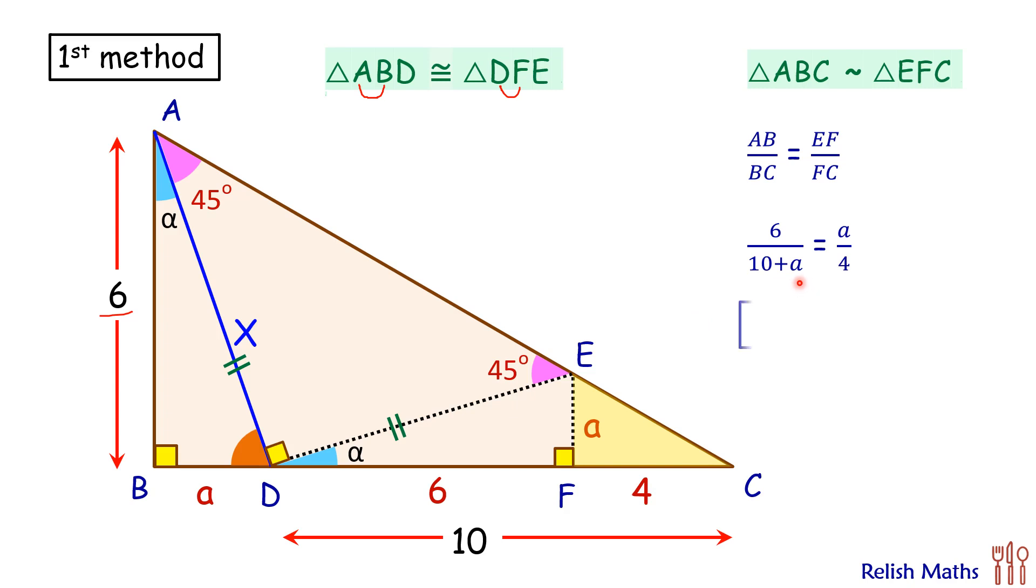On solving we'll get two values. Keeping the positive value we'll get a as 2 centimeter. Now in triangle ABD when we'll put a as 2, we can find the length AD or value of x by using Pythagoras theorem to get x as 2 root 10 centimeter.